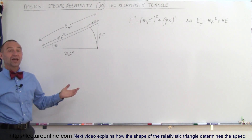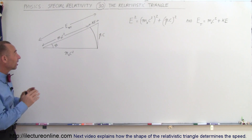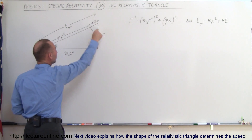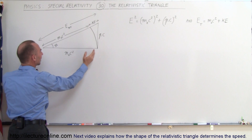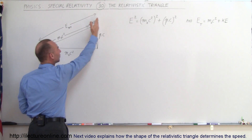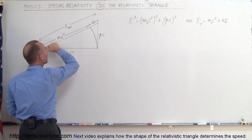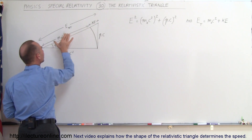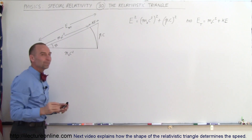Really ingenious — I wish I had thought of it; someone else, very smart, had thought of this concept. Notice how we drew here a right triangle where the bottom leg has a length equal to the rest mass energy. The opposite side is equal to the momentum times the speed of light, and the hypotenuse is equal to the total energy, which means it equals the rest mass energy plus the kinetic energy.